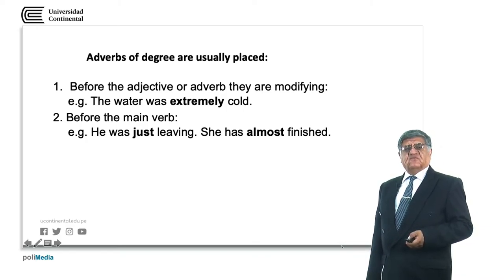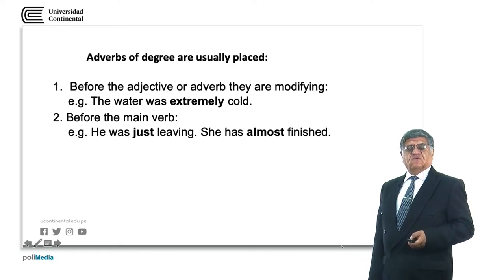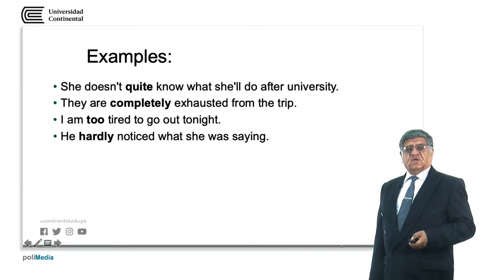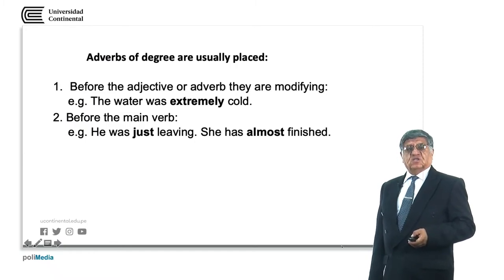An adverb of degree will normally go before the adjective or adverb that is modified, and also before the main verb. The water was extremely cold — cold is the adjective. He was just leaving. He has almost finished. In the first sentence, we have the verb to be acting as a helping verb, and leaving is the main verb. The verb to be helps give the coherence of the action.